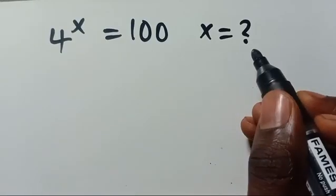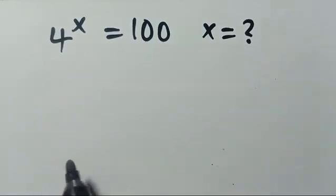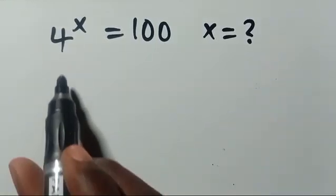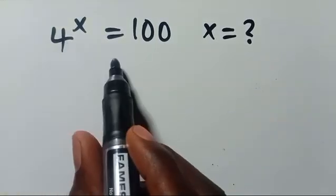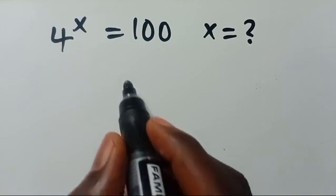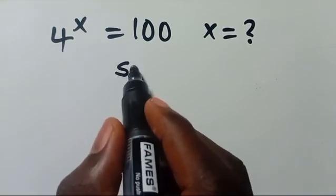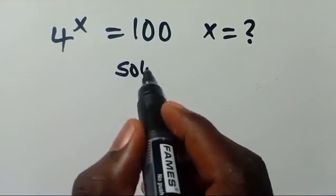What is the value of x given that 4 to the power of x equals 100? Let's have the solution.